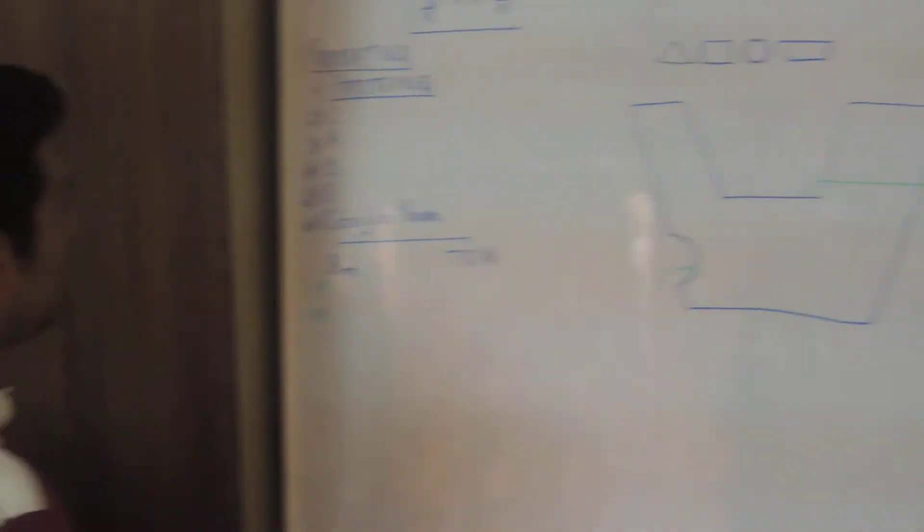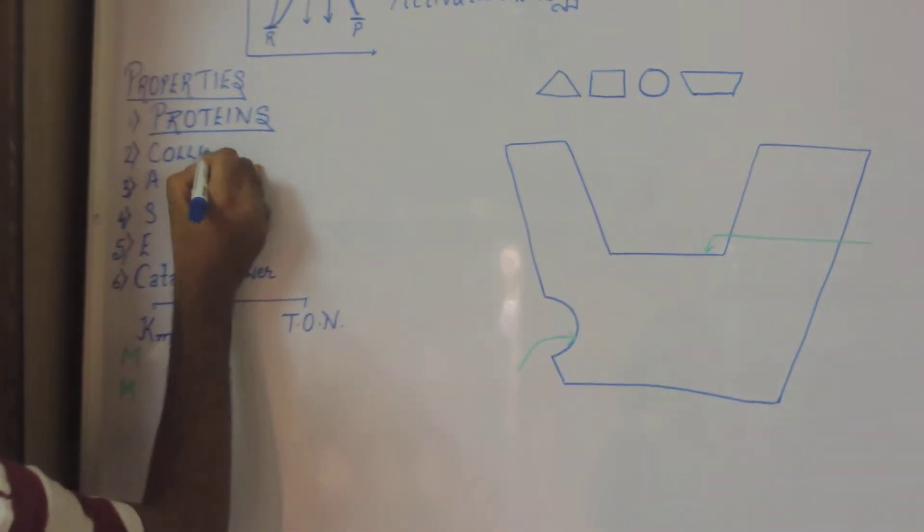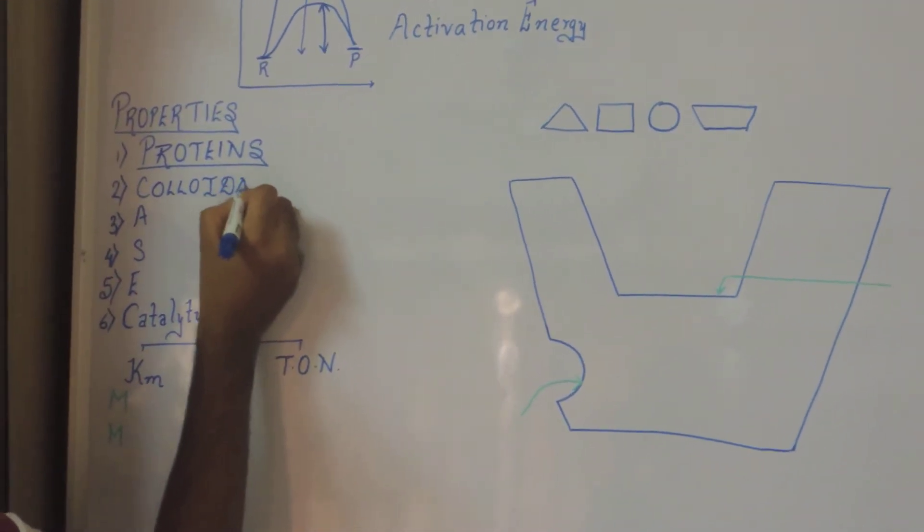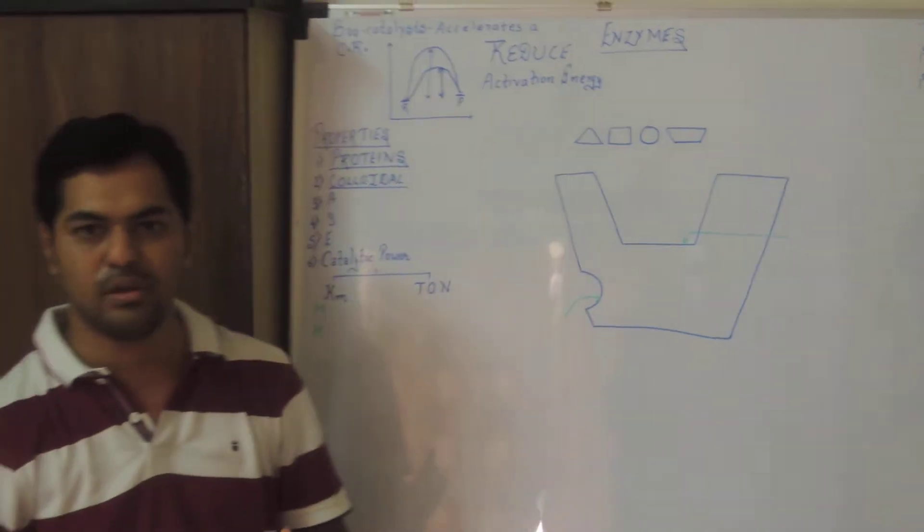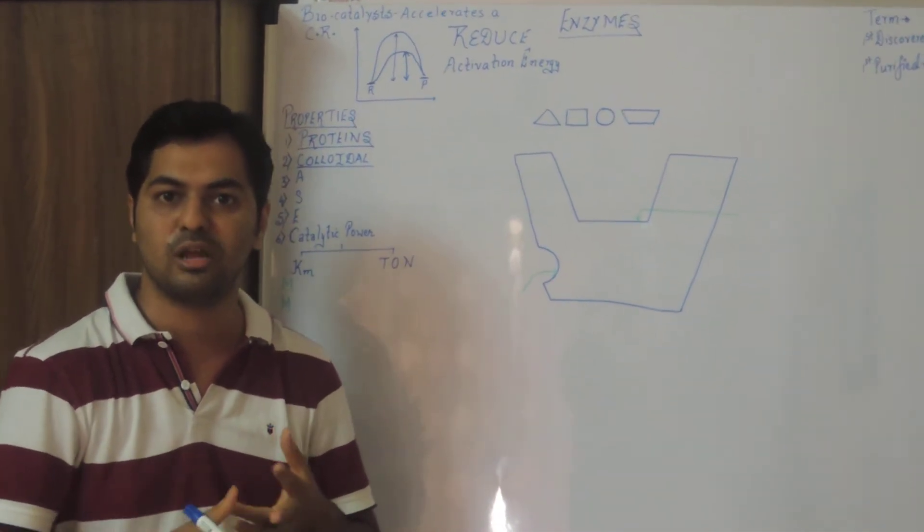Second property, what is the nature? Enzymes are colloidal in nature. What is a colloid? We are aware that a mixture can be a solution, it can be a suspension, it can be a colloid. And a colloid has dispersion phase, dispersion medium.